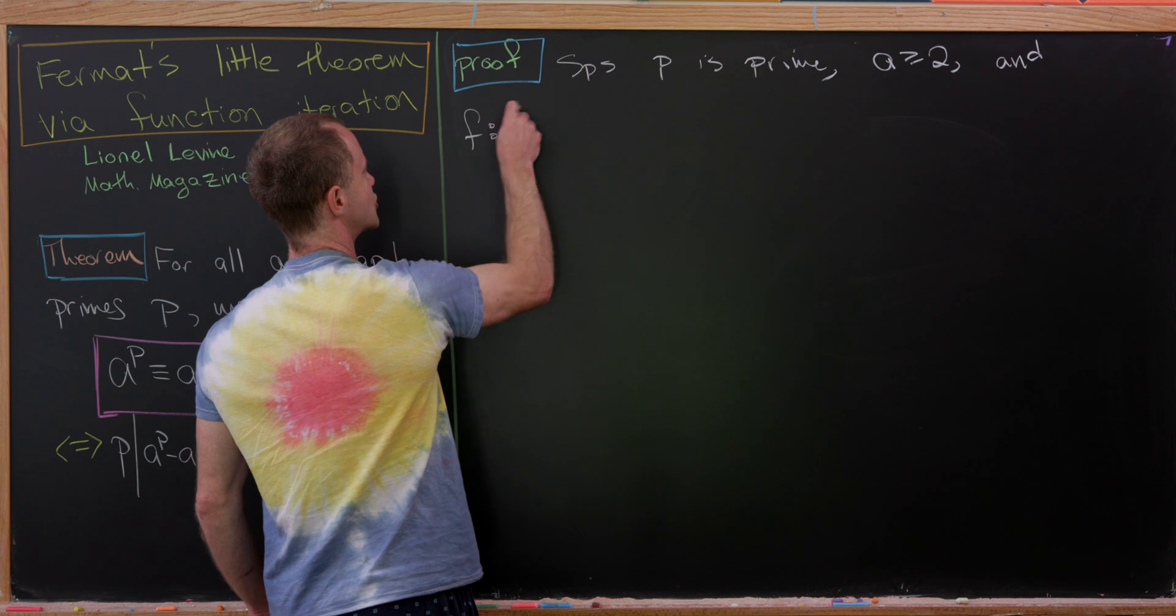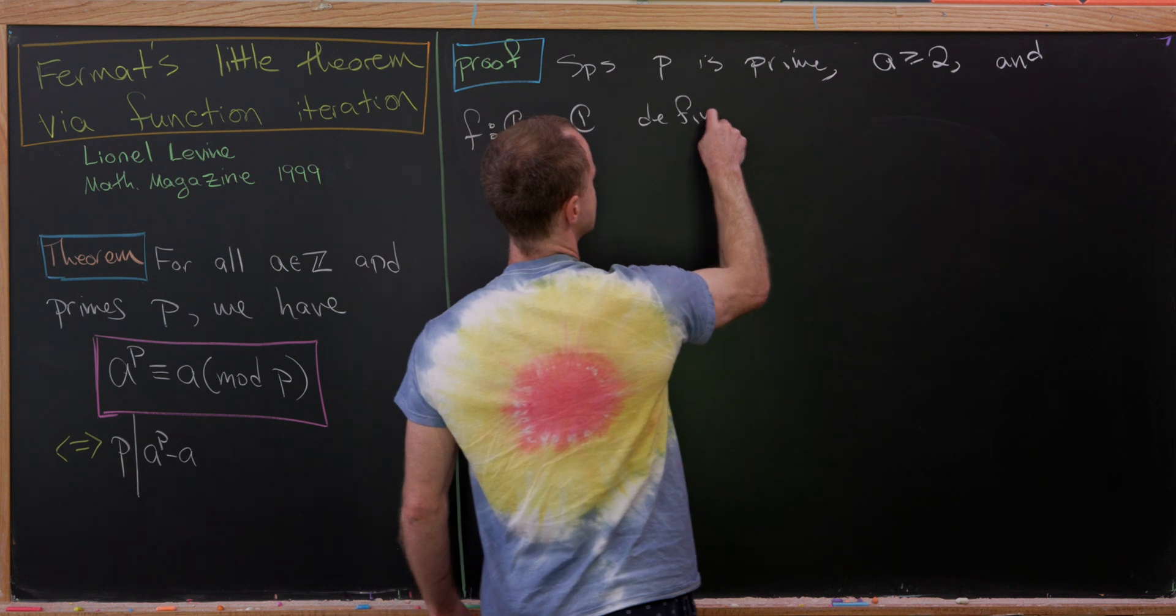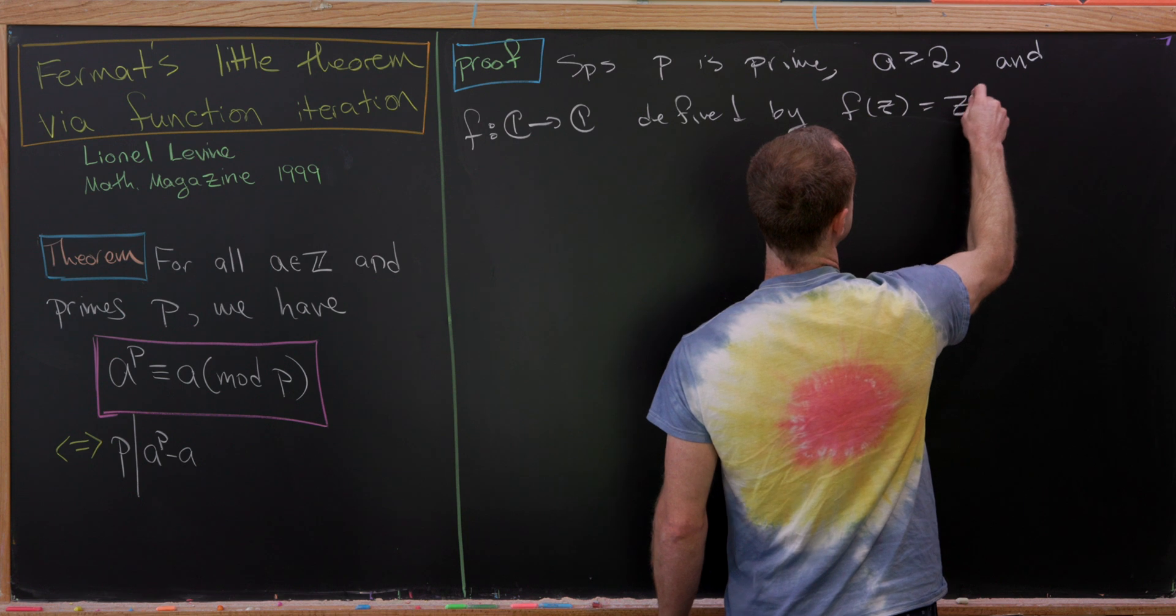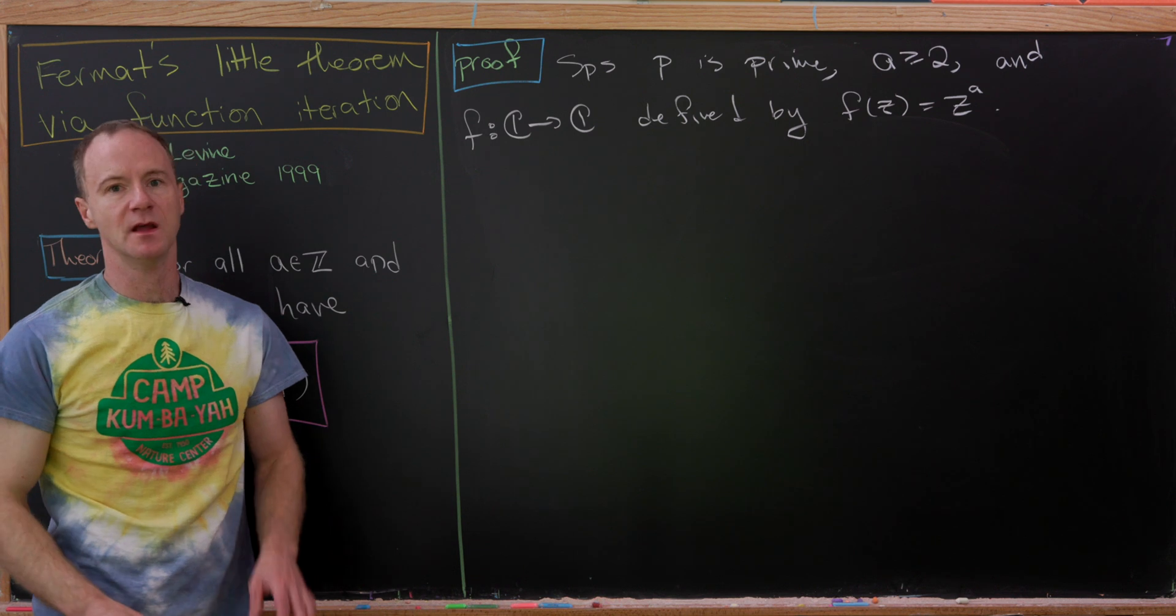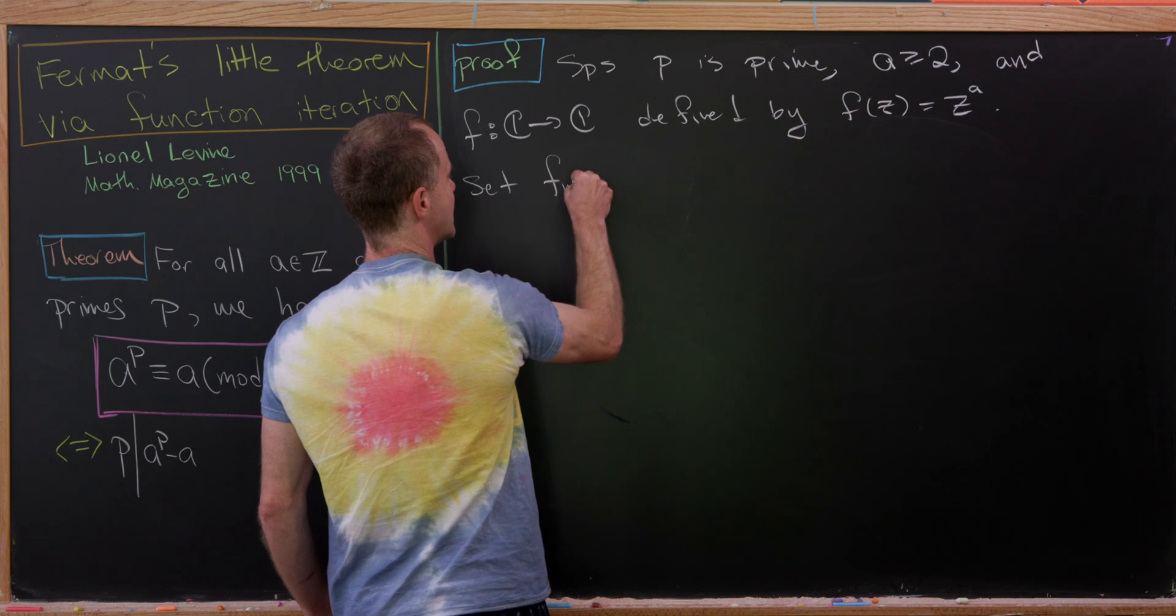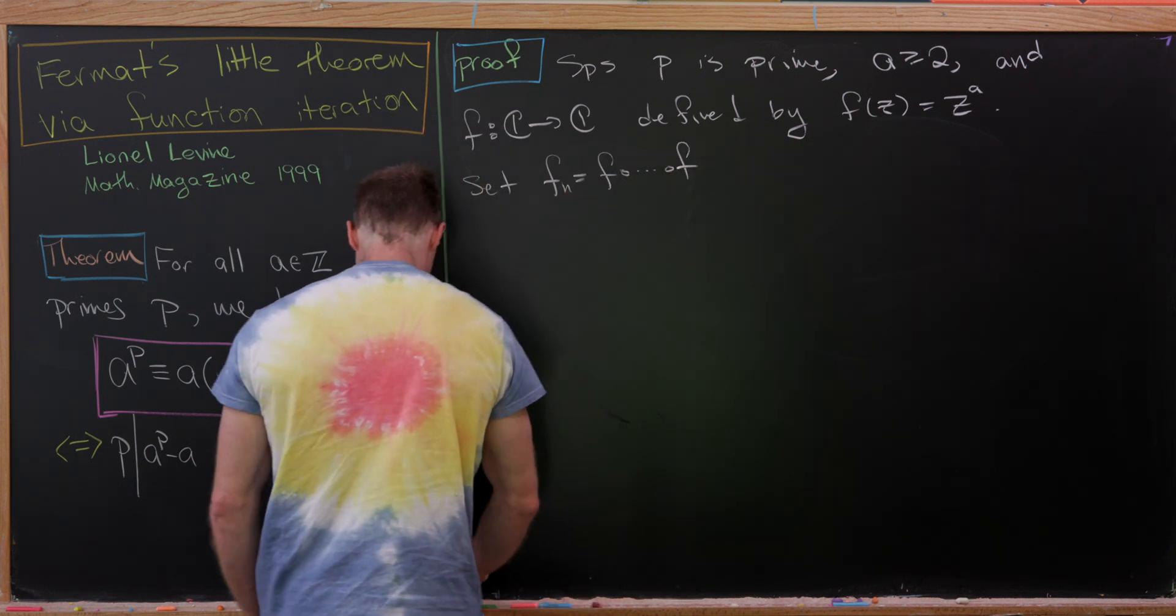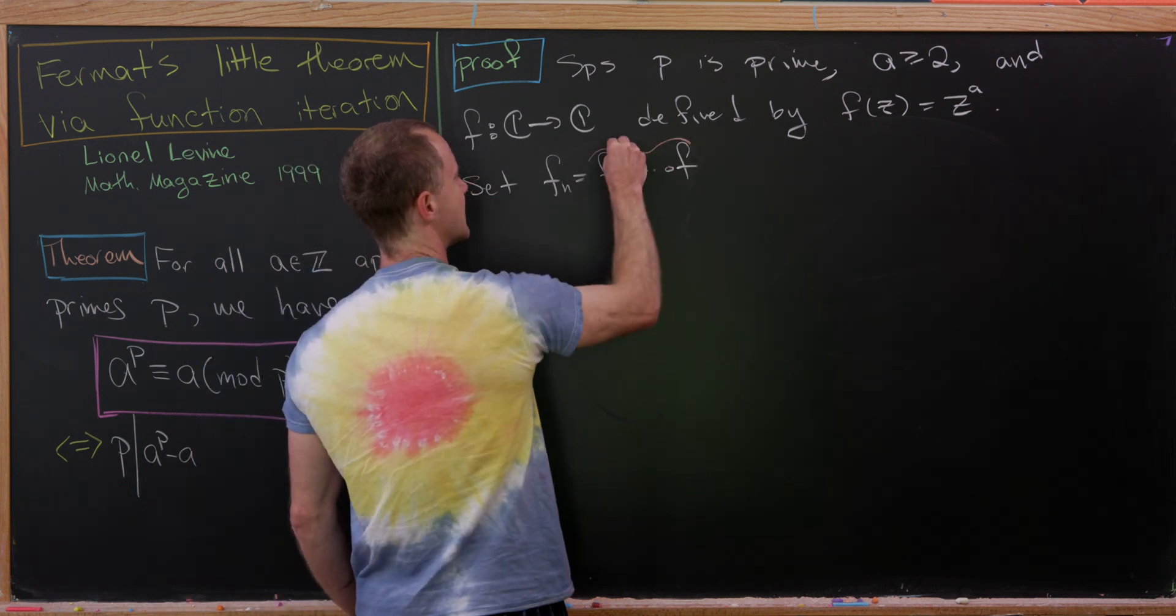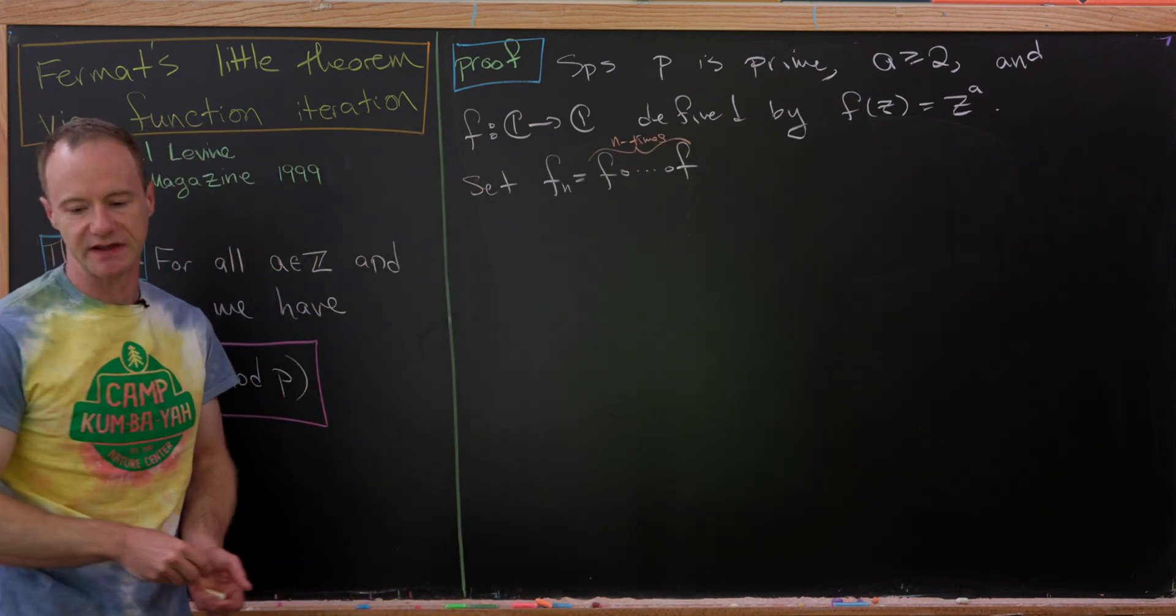And this will be a function from complex numbers to complex numbers defined by F evaluated at Z is equal to Z to the A power. Okay, so that's good. But now we're going to introduce a little bit of notation. So let's set F sub N to be the n-fold composition of F. So we'll just denote it like this. We've got all of these Fs, and we have n times of them. So we're composing F with itself n times.